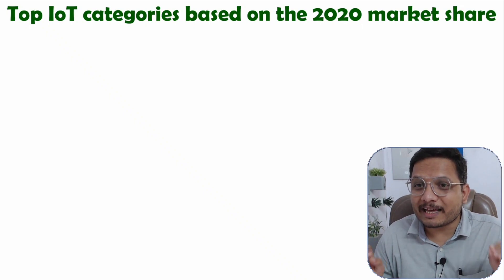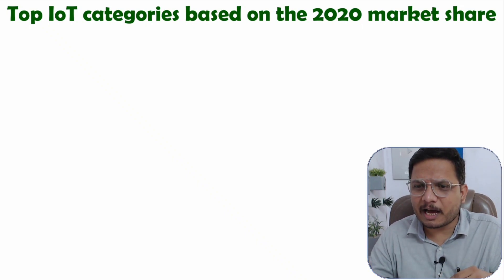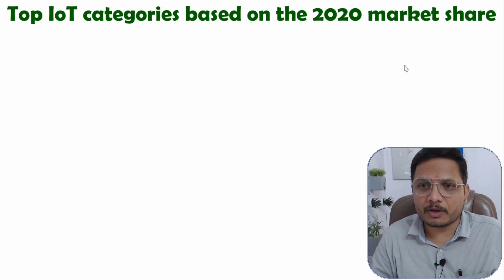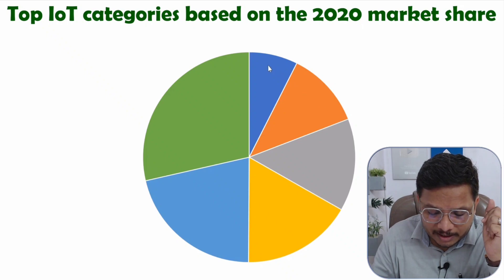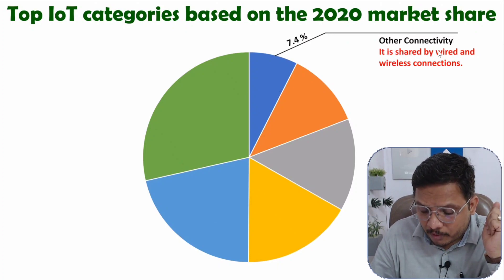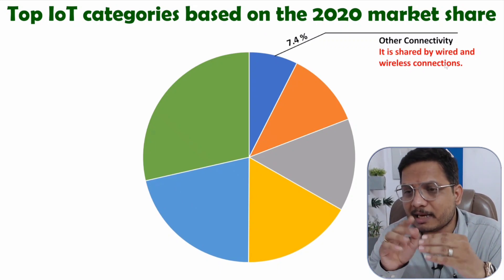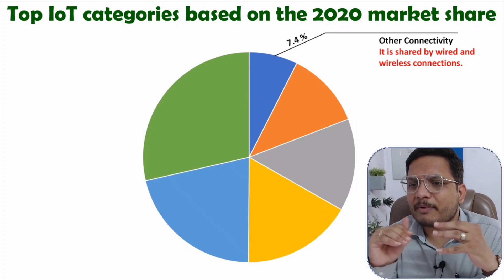Now I'll explain the top IoT categories based on the 2020 market share. How market share was distributed across different IoT categories will be explained using a pie chart. In the pie chart, the top IoT categories are shown in terms of area as percentages. The smallest category has a share of 7.4%, belonging to other connectivity — covering wired and wireless connections. In the IoT structure, there is a need for connectivity, along with gateways.